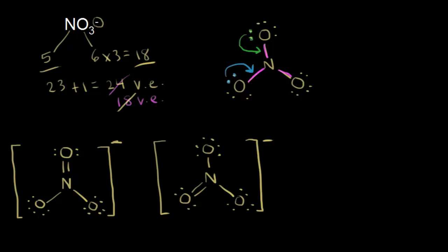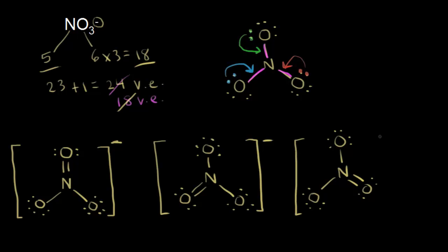Of course, we could also have taken a lone pair of electrons from the oxygen on the bottom right, moving them in to form a double bond. Now we would have nitrogen double bonded to the oxygen on the bottom right, which has only two lone pairs. The oxygen at the top has a single bond with three lone pairs, and the same for the oxygen on the bottom left. So this is another possible dot structure, and these three are considered to be resonance structures of each other.